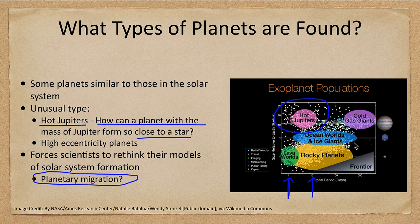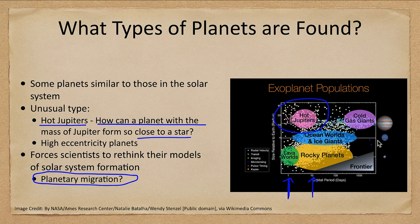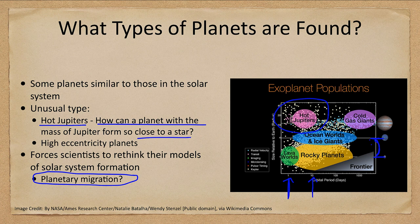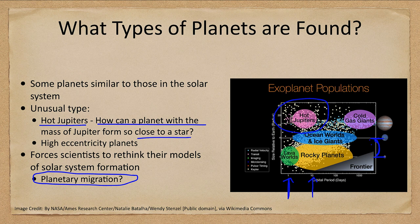We also see lots of planets that we do not see anything like in our solar system. Here would be Neptune, here is Earth. We have lots of planets, in fact the majority of the planets are between Earth and Neptune in terms of size. There are no planets like that in the solar system.